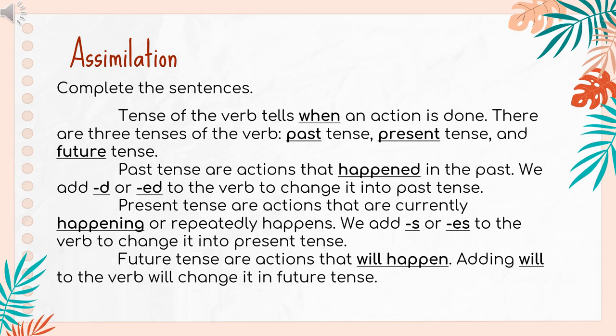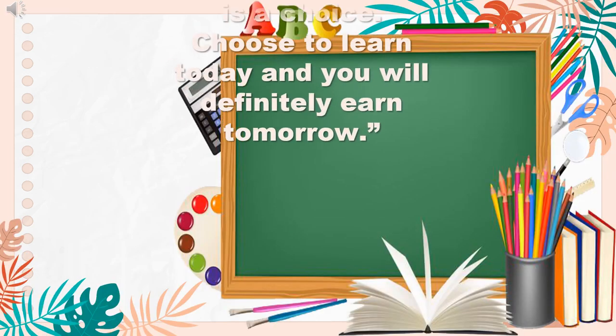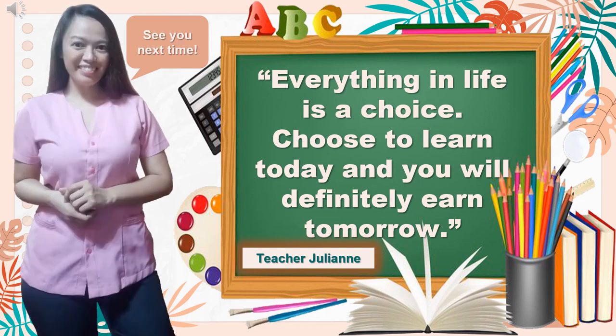Before we end, always remember: tense of the verb tells when an action is done. There are three tenses of the verb: past tense, present tense, and future tense. Past tense are actions that happened in the past. We add "-d" or "-ed" to the verb to change it into past tense. Present tense are actions that are currently happening or repeatedly happen. We add "-s" or "-es" to the verb to change it into present tense. Future tense are actions that will happen. Adding "will" to the verb will change it into future tense. I am glad to have you in my class. Again, this is Teacher Julian saying: Everything in life is a choice. Choose to learn today and you will definitely earn tomorrow. God bless and happy learning. See you next time!